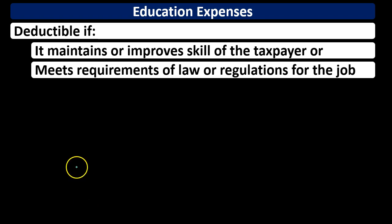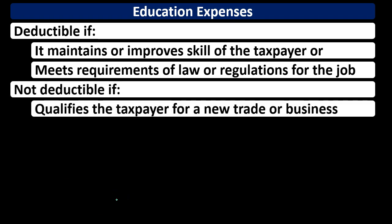Education is deductible if it maintains or improves skills of the taxpayer, or meets requirements of law or regulations for the job. If we're doing education in order to improve our skill set within our current position, or to meet certain conditions for that current job, or to comply with regulations necessary for the maintenance and upkeep of that job, then those would be deductible on the Schedule C.